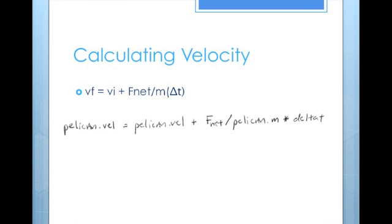The line of code to calculate this is shown here. Remember to use the right variable names, pelican dot vel for velocity of the pelican, and pelican dot m for mass of the pelican. You can use pelican dot vel for final and initial velocities because you are updating the velocity, and you can overwrite that initial variable.